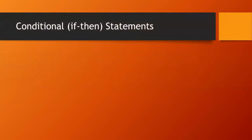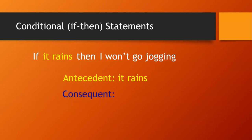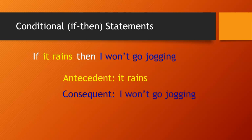Let's identify the parts of a conditional statement, also called an if-then statement. We'll use this statement as our example: 'If it rains, then I won't go jogging.' The antecedent immediately follows the word 'if,' so in this statement, 'it rains' is the antecedent. The consequent immediately follows the word 'then,' so the consequent is 'I won't go jogging.'